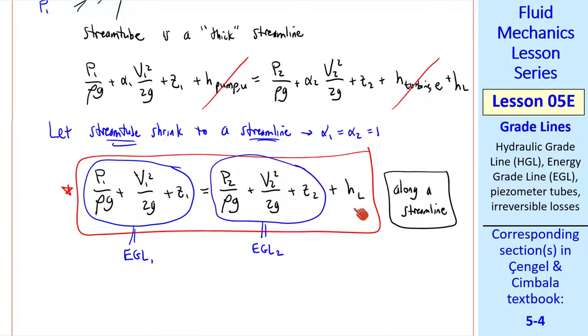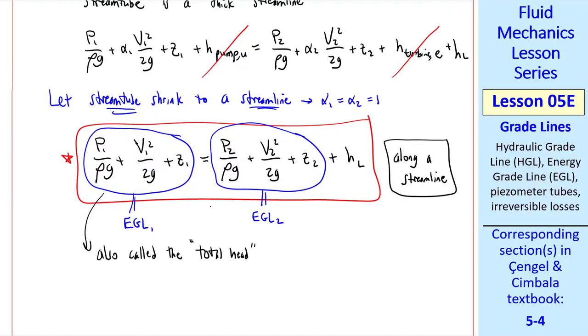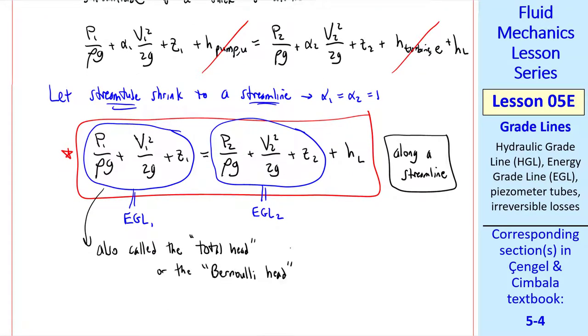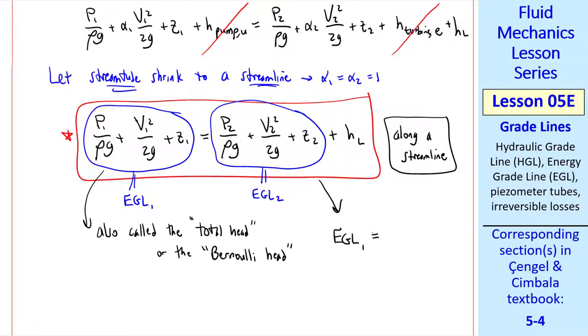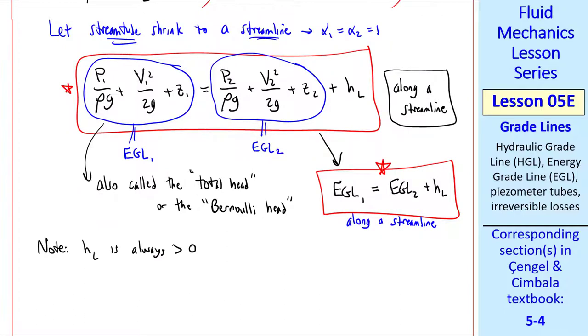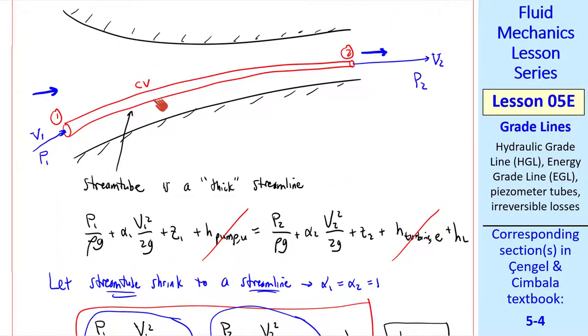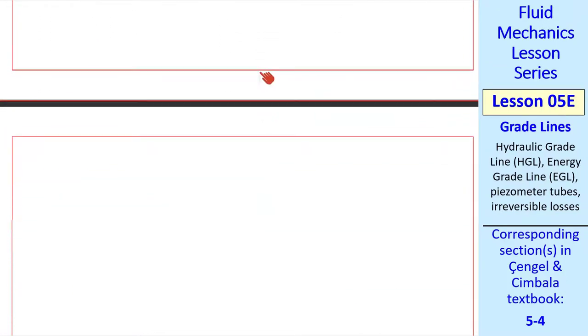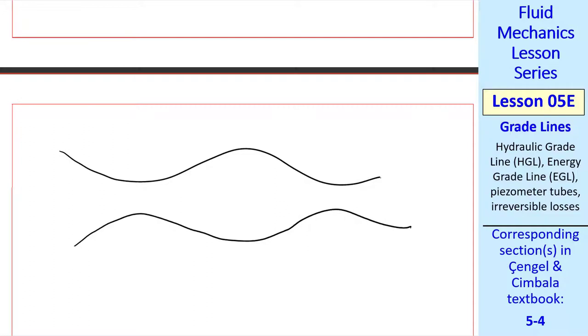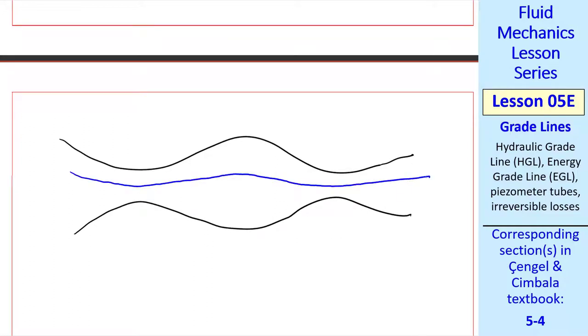But this grouping of terms is EGL1. And this grouping is EGL2. And this term, as you recall, is the irreversible head losses. By the way, this grouping of terms can also be called the total head or the Bernoulli head, in reference to the Bernoulli equation that we'll talk about in the next lesson. So this equation simplifies to EGL1 equal EGL2 plus HL along a stream line. We note that since HL is always greater than 0, EGL must continually decrease. In a flow like this, there will be some friction, and the EGL here will be greater than the EGL here. This is true no matter what kind of pipe or duct we have. The duct can be converging and diverging at various points. But along some stream line, you can be assured that EGL1 is greater than EGL2, which is in turn greater than EGL3.